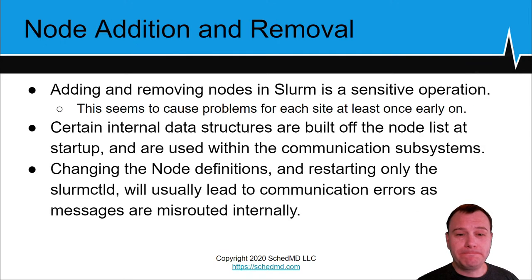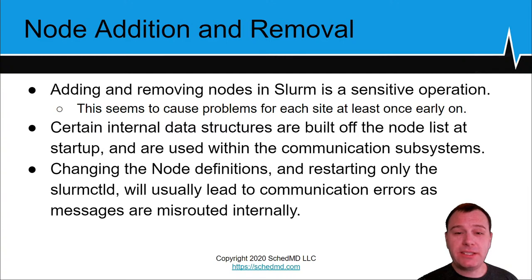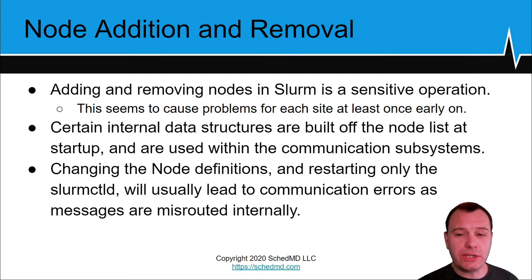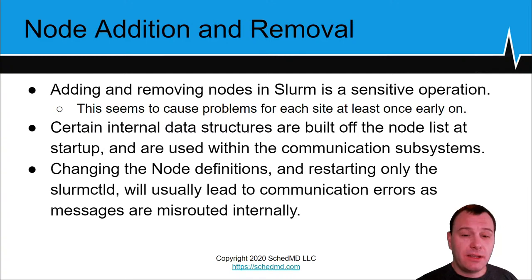Adding and removing nodes in Slurm is a sensitive operation that seems to cause problems for each site at least once early on. Certain internal data structures are built off the node list at startup and are used with the communication subsystems. Changing node definitions and restarting only the slurmd will usually lead to communication errors as messages are misrouted internally.